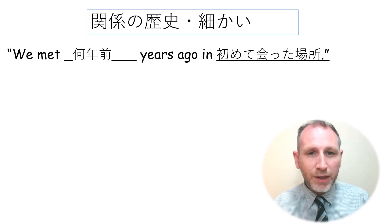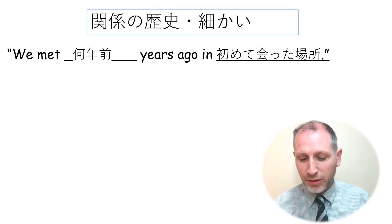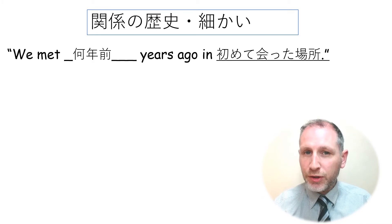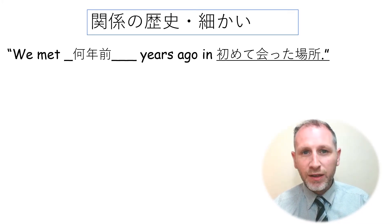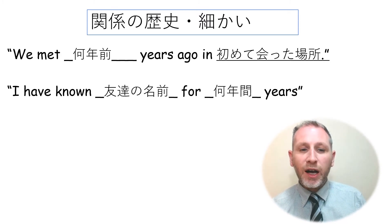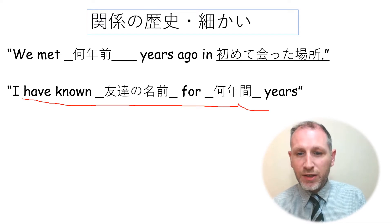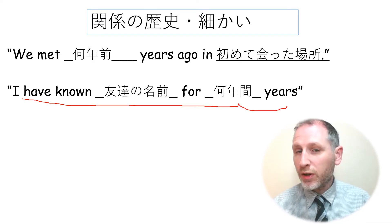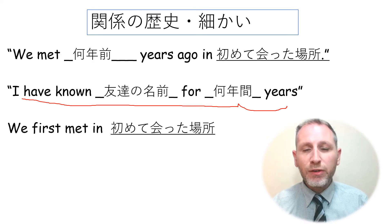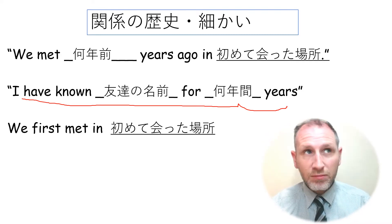For the relationship history, you can introduce phrases like: when you first met, how many years ago, where you first met. For example: 'We met three years ago in junior high school,' or 'We met five years ago in elementary school.' You can also use: 'I have known [friend's name] for X years.' For example, 'I have known Tom for 20 years,' or 'I have known Asuka for 14 years.' Another phrase is: 'We first met in [place].' For example, 'We first met at Meishu Hitachi Koutou Gakuen.'